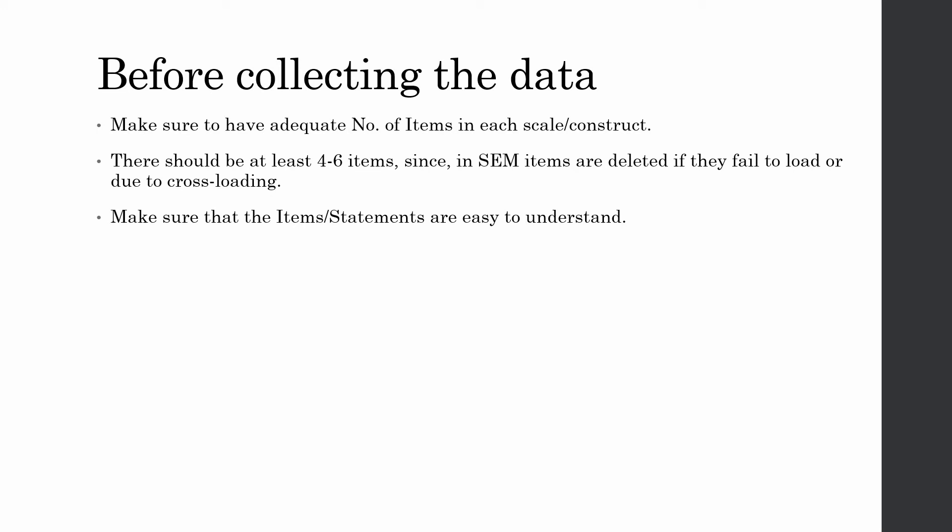Make sure that your items are worded correctly so that respondents are able to understand the gist of the statement and give proper answers. Also make sure there is no overlapping in the statements across different constructs. This can happen in social sciences research because constructs may be closely related, and statements measuring one construct may overlap with another — for example, a statement in service quality may overlap with one in satisfaction.